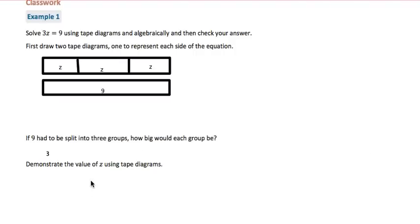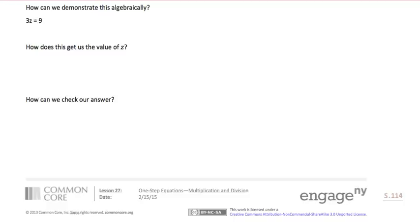We can draw another tape diagram showing the value of z, which is 3. Now we're going to demonstrate this problem algebraically. The original problem: 3 times z equals 9.